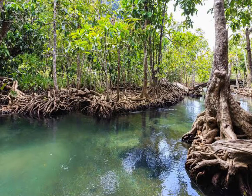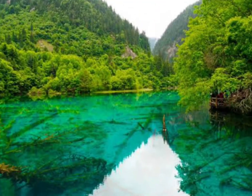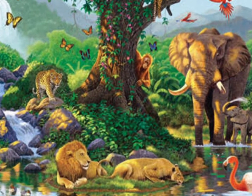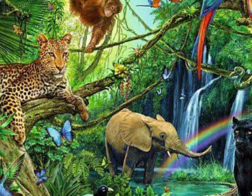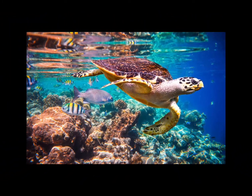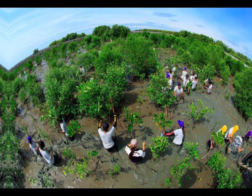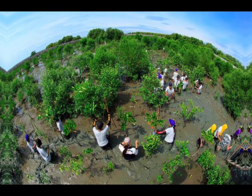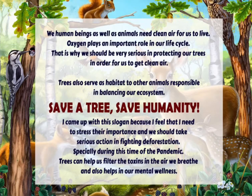See how beautiful our environment is — let's protect it in our own simple ways. Do not use products with CFC. Practice organic farming. Always practice the 3 Rs: reuse, reduce, recycle. We, human beings as well as animals, need clean air for us to live. Oxygen plays an important role in our life cycle, that is why we should be very serious in protecting our trees in order to get clean air.